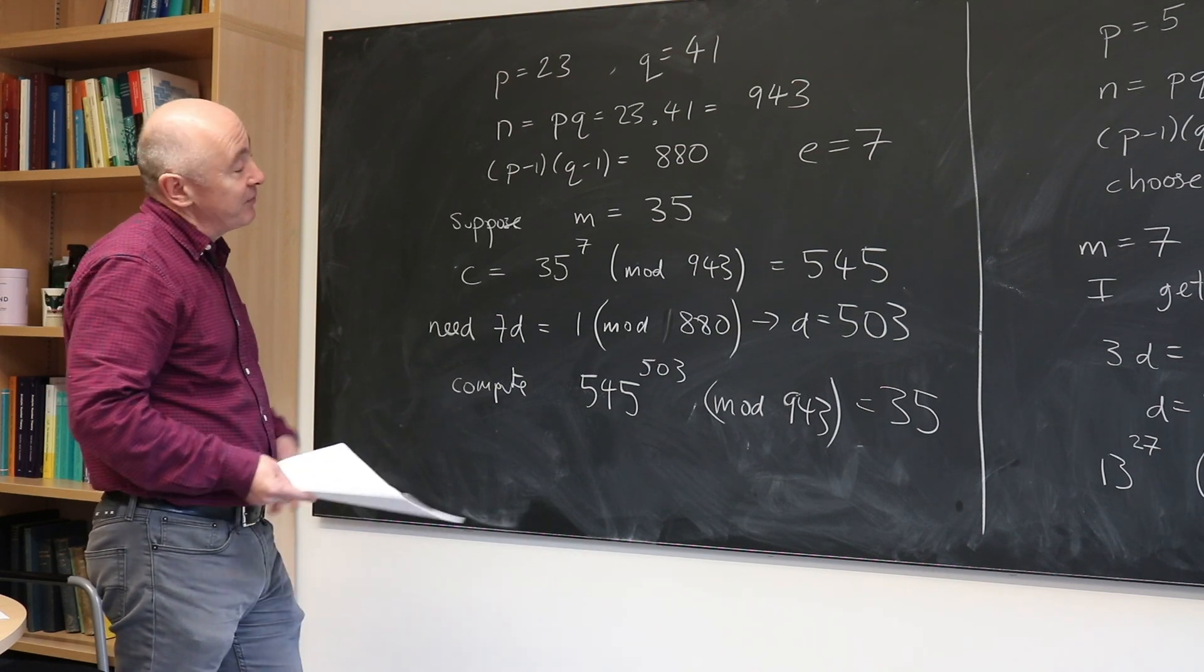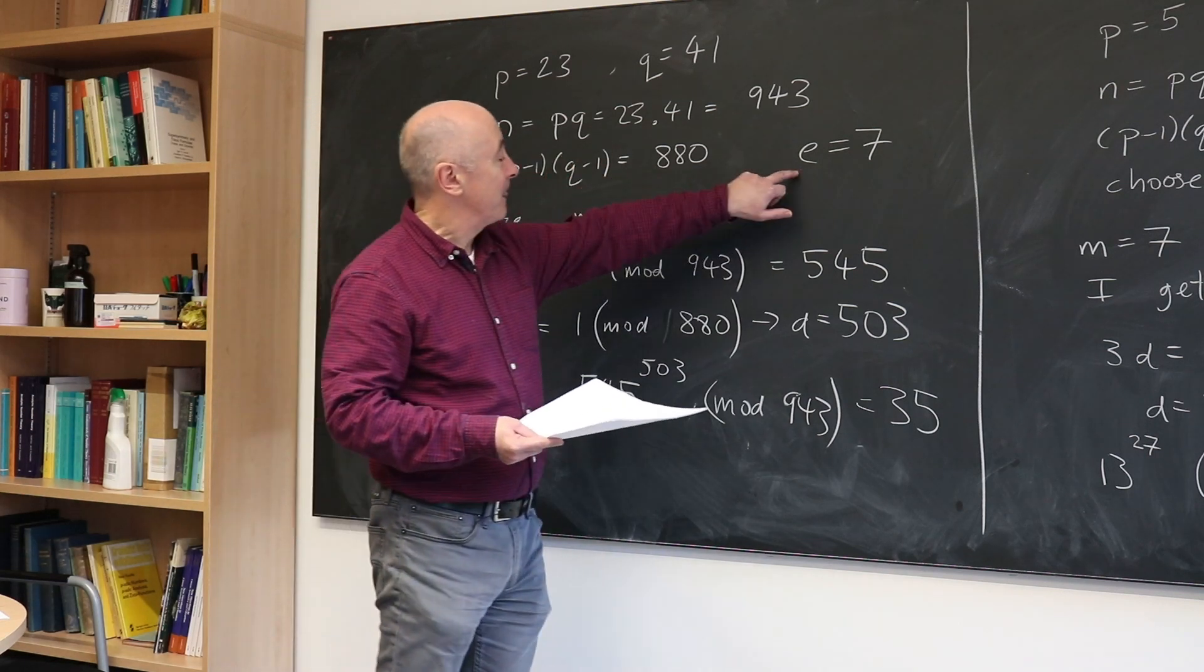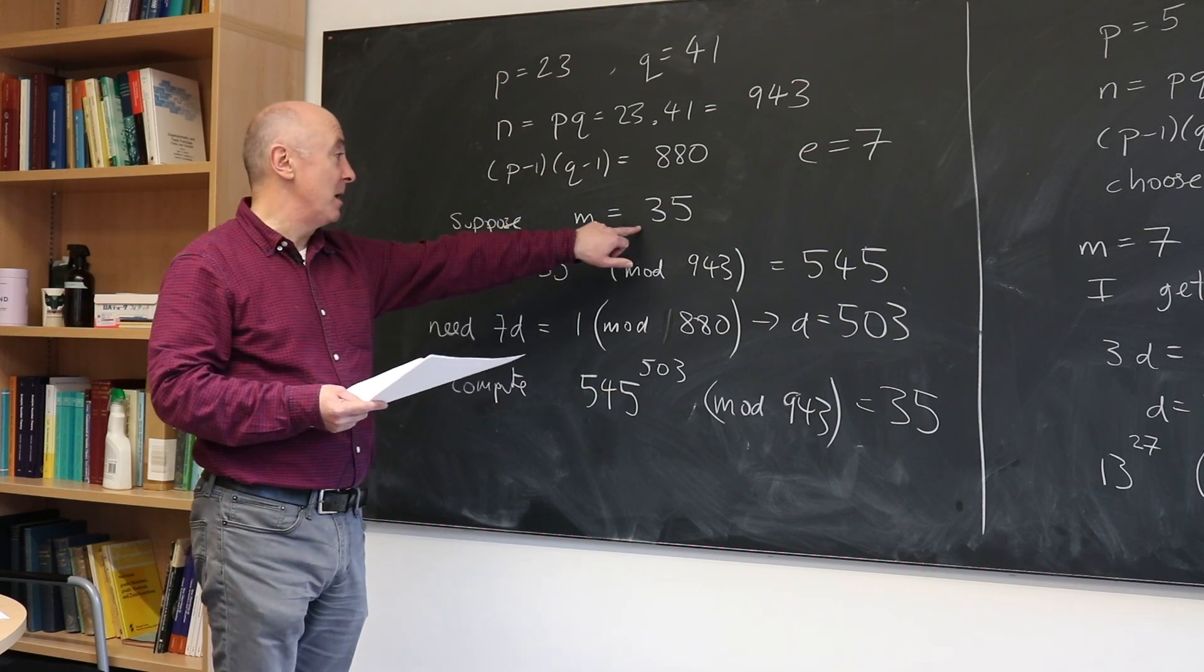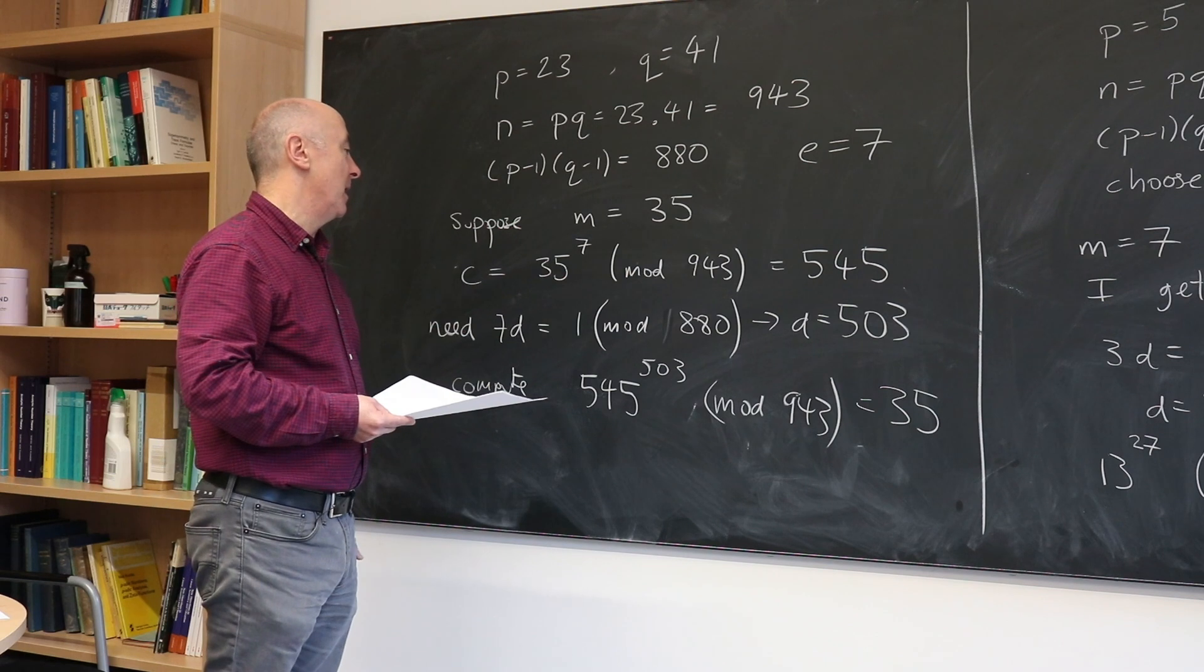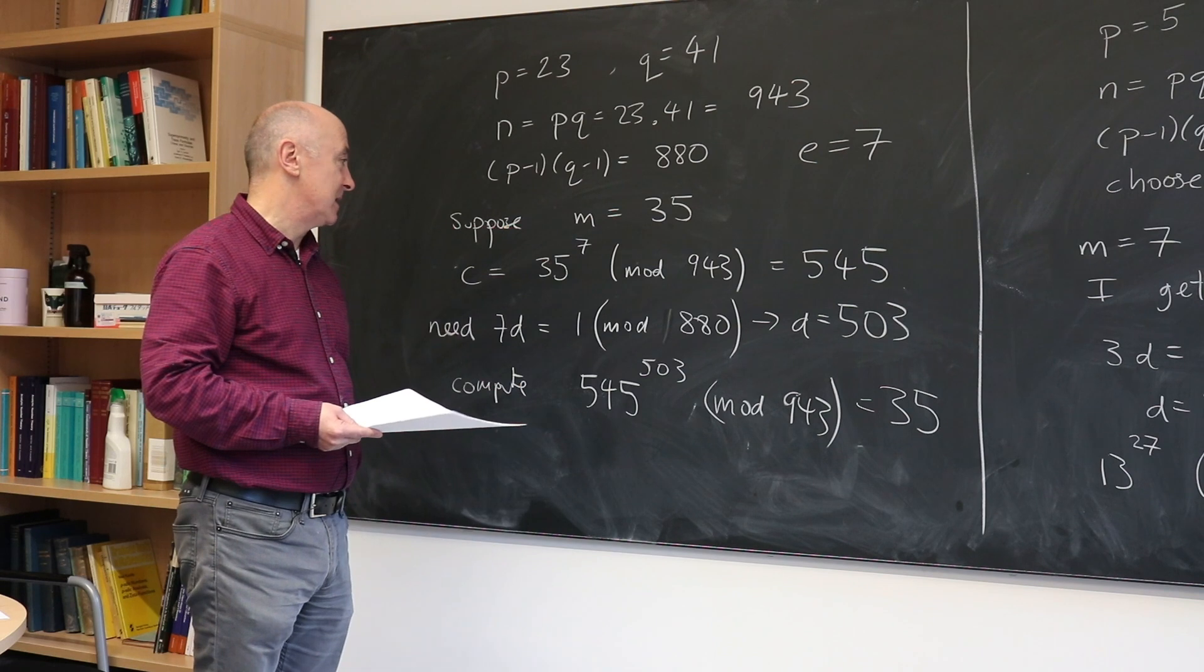And this is how public key cryptography works. I advertise something very publicly. I advertise N and E. Anyone can send me a message, a number or a text message that's converted into a number, perhaps by assigning numbers to the letters in the message.